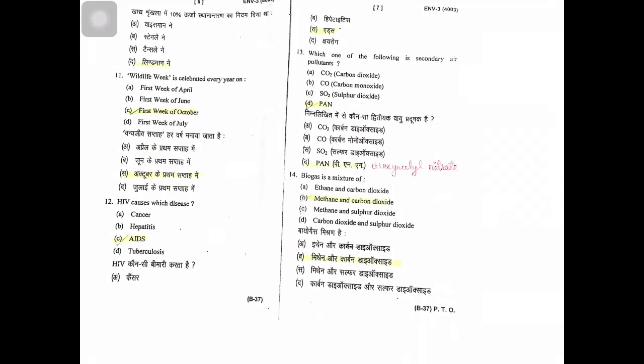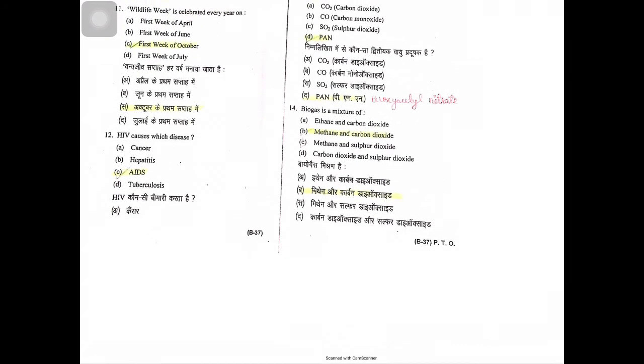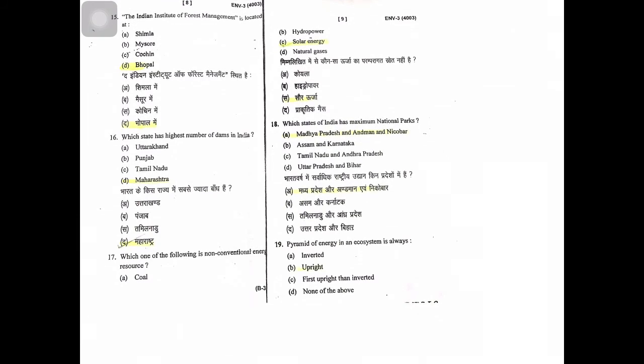Wildlife week is celebrated every year in the first week of October. HIV causes AIDS. Which of the following is a secondary air pollutant? Peroxyacetyl nitrate. Biogas is a mixture of methane and carbon dioxide.